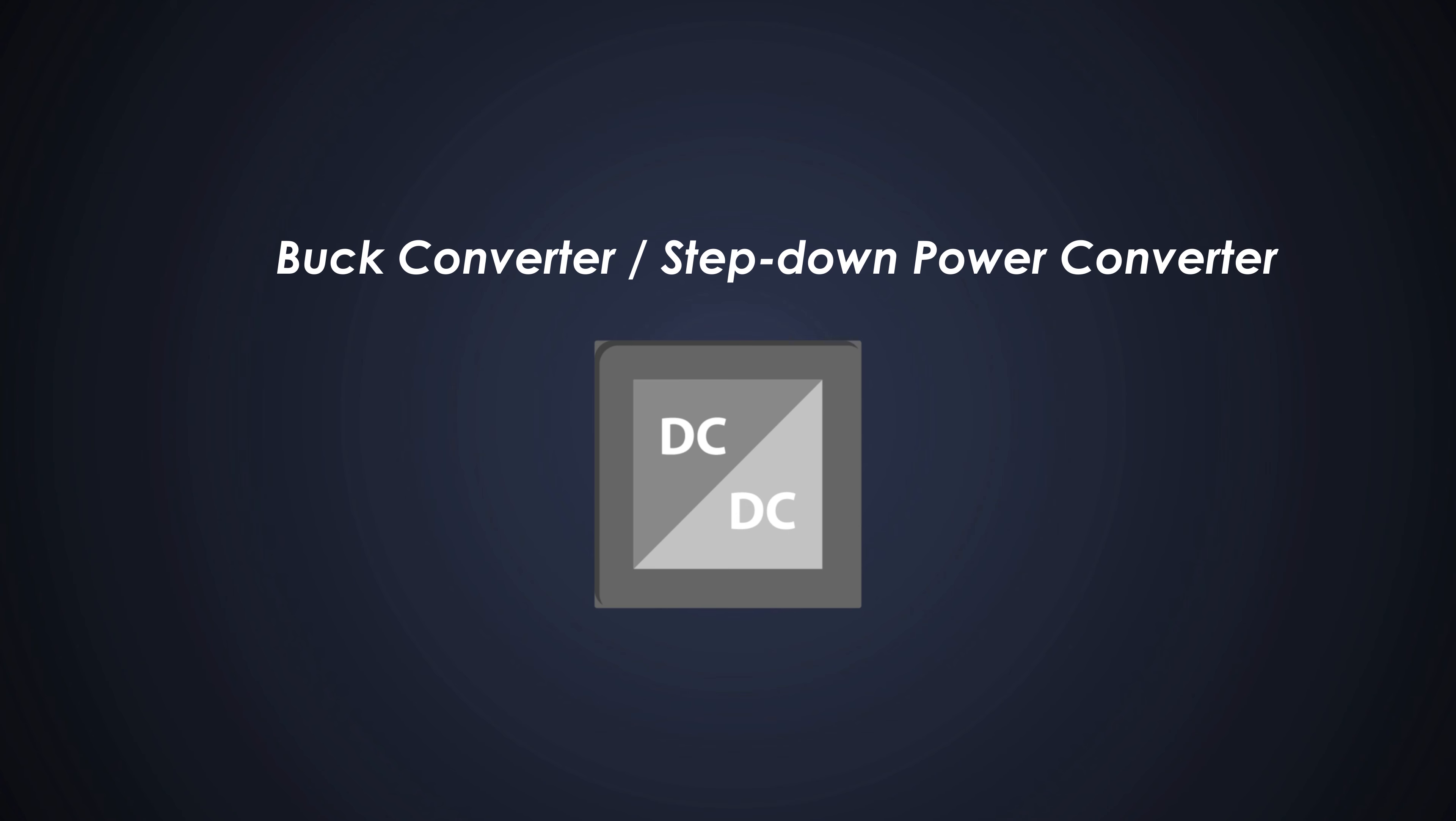The buck converter is a non-isolated DC to DC converter topology which steps down the input voltage. That's why it is also called a step-down power converter. The output voltage is always less than the input voltage in the same polarity. Like if you have an input voltage of 30V, it will step down to a constant 12V power supply.